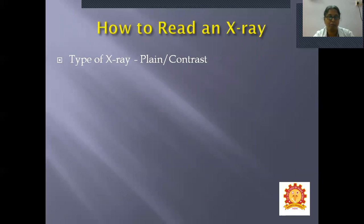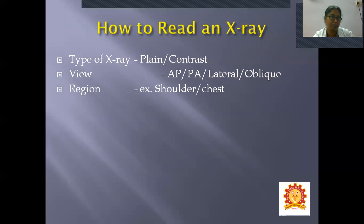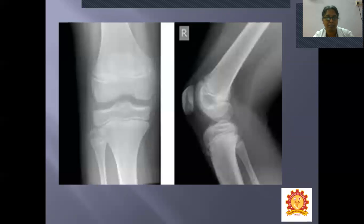How to read an X-ray: whenever an X-ray is given to you, read in this order — first state the type of X-ray (plain or contrast), then the view (AP, PA, lateral, or oblique), then the region (shoulder, elbow, hip, chest, etc.), then describe the bony features and soft tissue features. Also learn to mount the X-rays in the X-ray lobby. That concludes radiological anatomy.